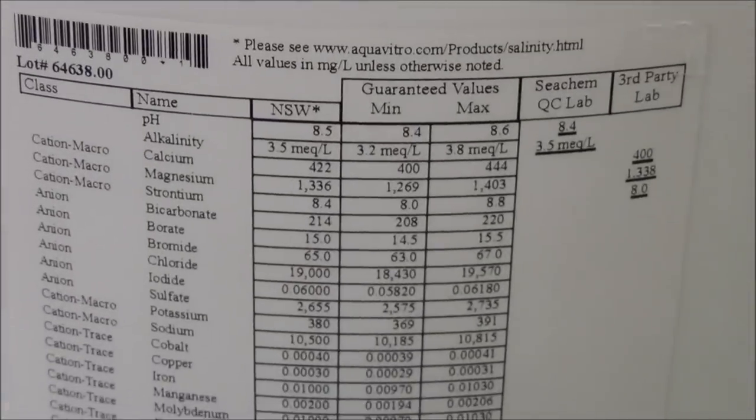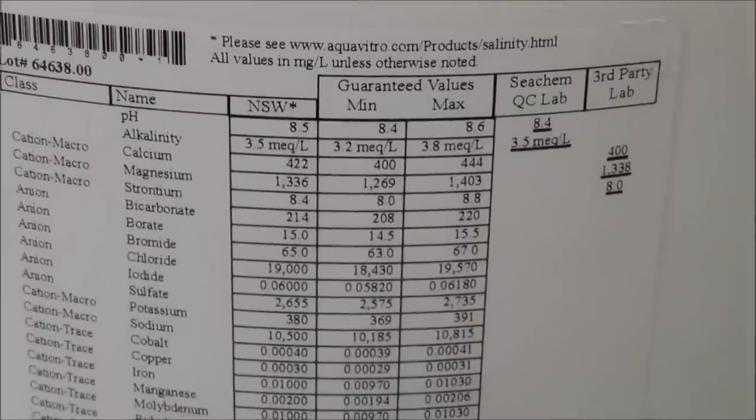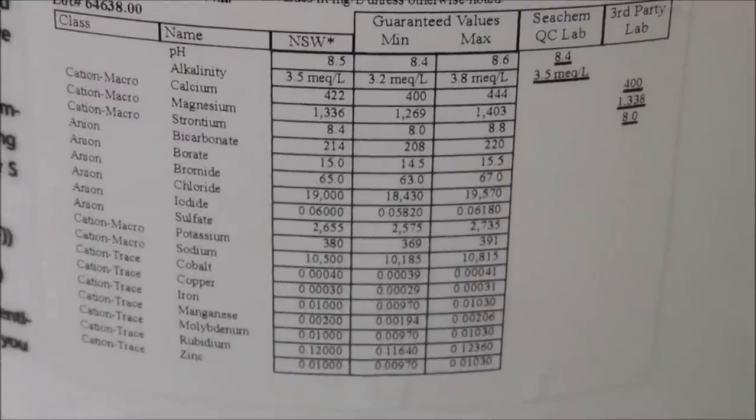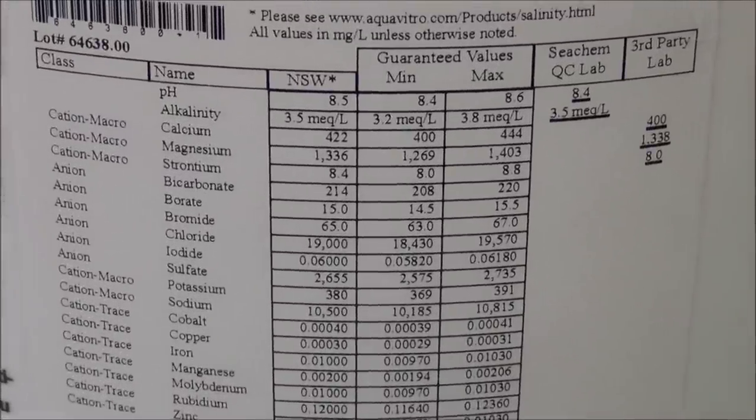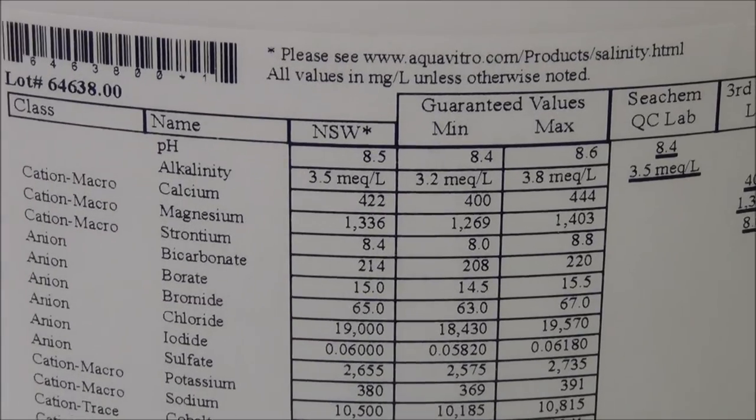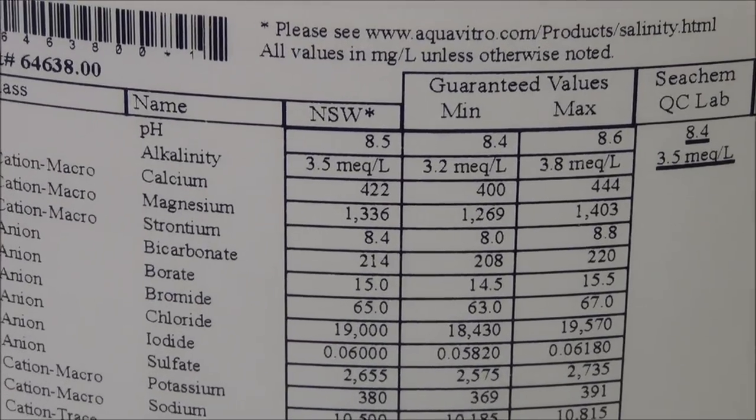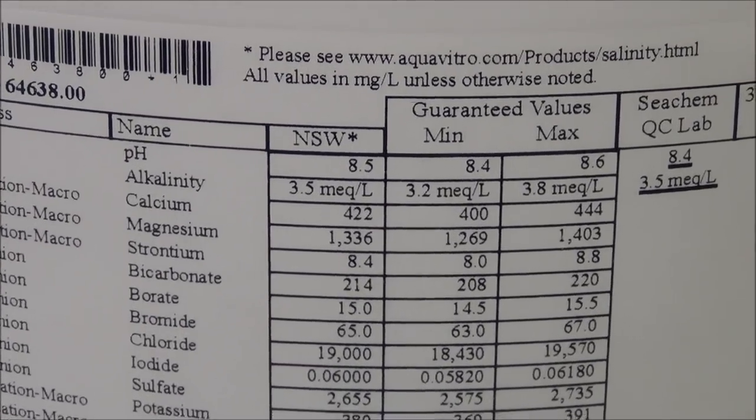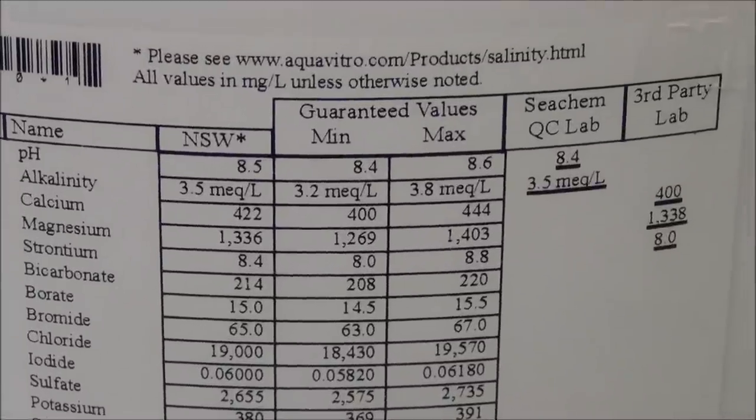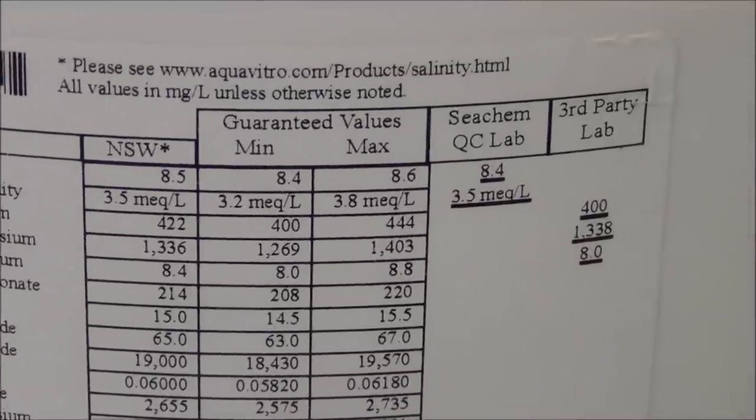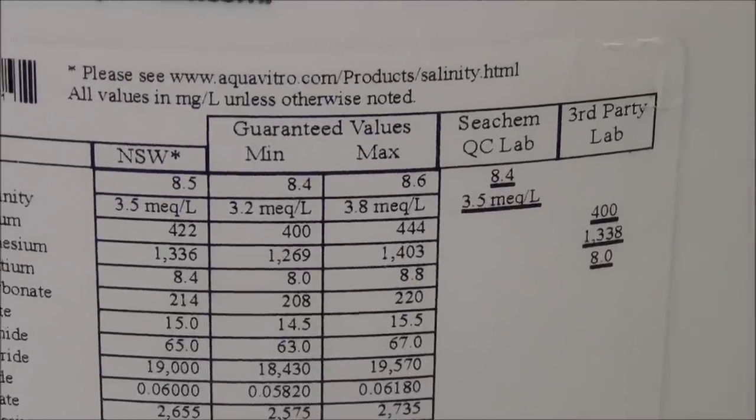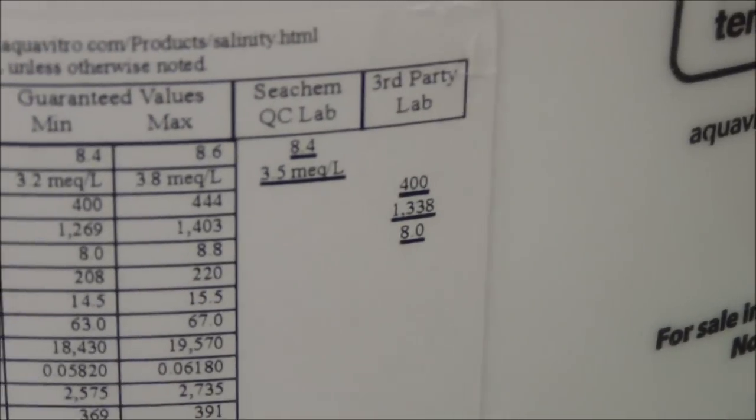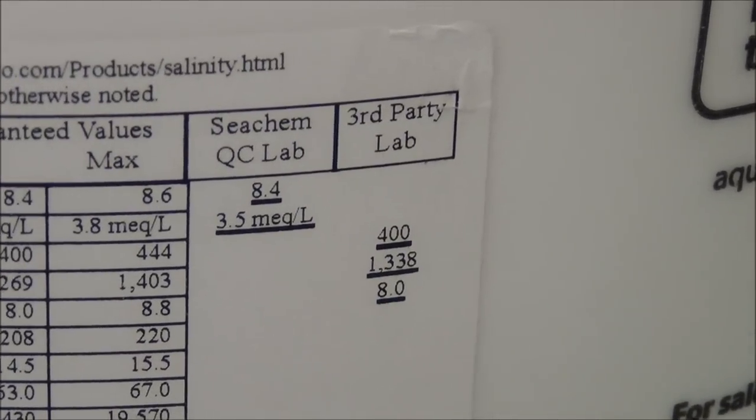And what you see here on the label are the results or the consistency of the salt that you're going to get. Take a look at calcium here. The natural sea water is 422 milligrams per liter. Your guaranteed minimum of 400 milligrams per liter and guaranteed maximum is 444. The independent laboratory tested it at 400 milligrams per liter.